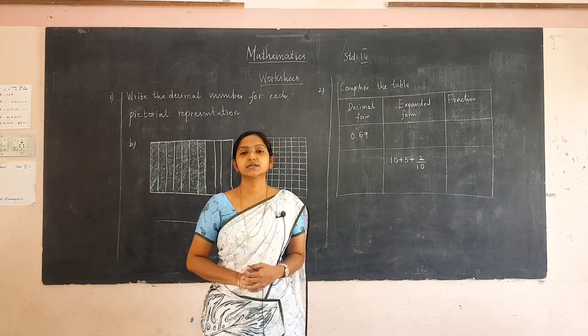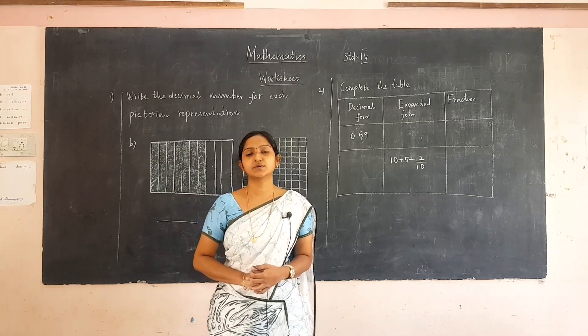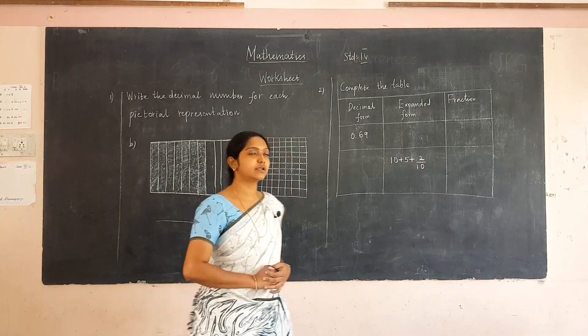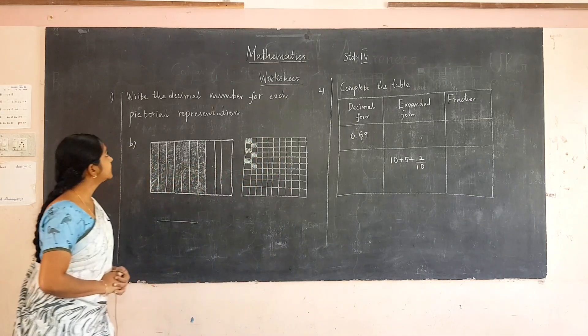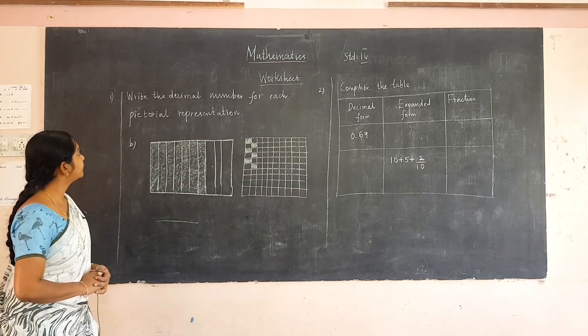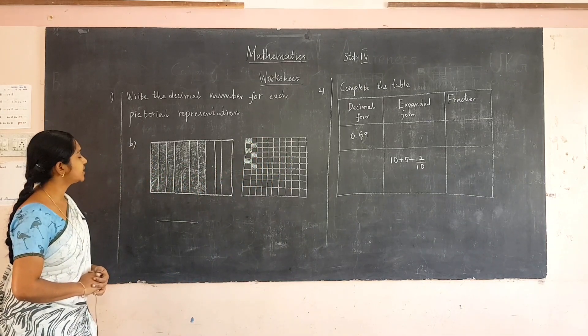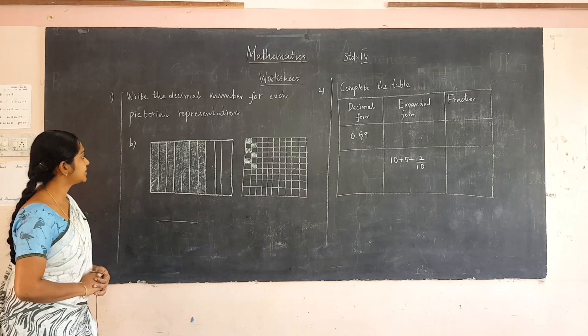Good morning students. Today we are going to solve a worksheet. The first problem is: write the decimal number for each pictorial representation.